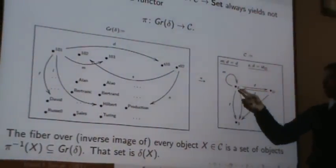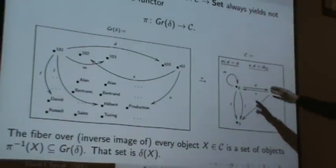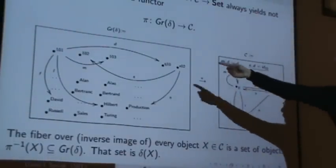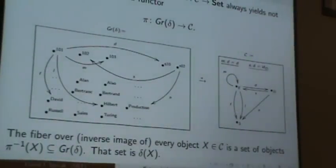Each one of these represents a table and its rows are here. And so the fibers, the fiber over E is a set of employees.